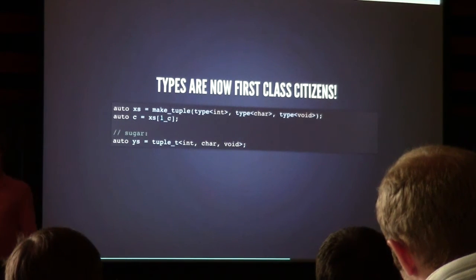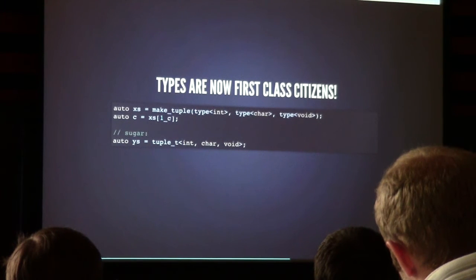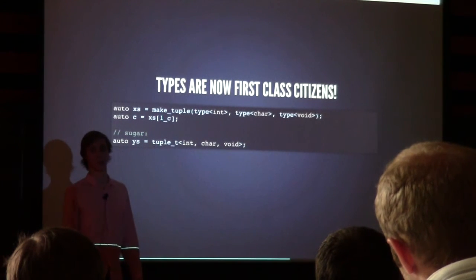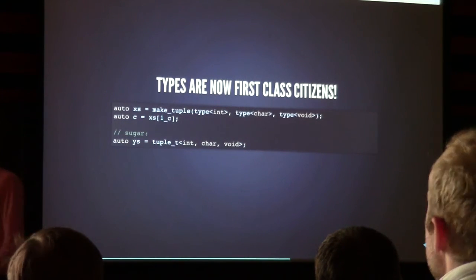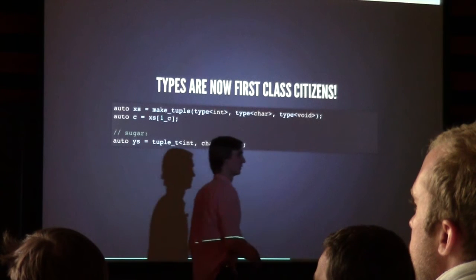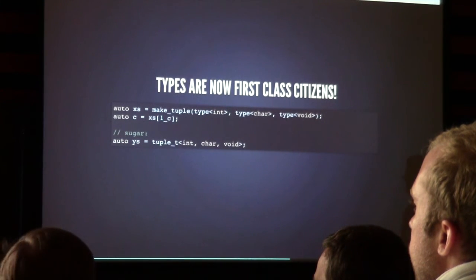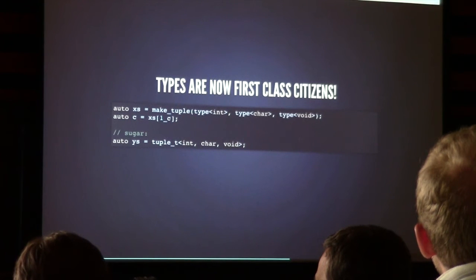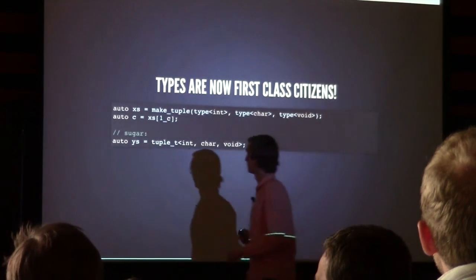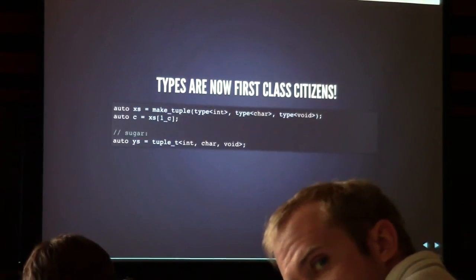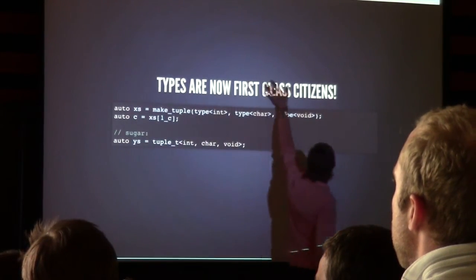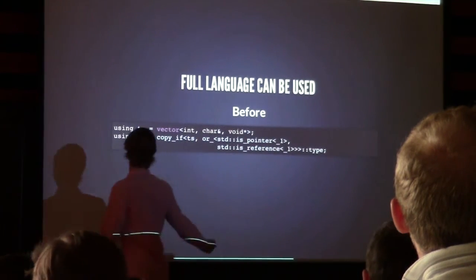One attendee disagrees that these are true first-class citizens, arguing you'd need to put them in a vector and sort at runtime. My response: what is special about std::vector? Being homogeneous is not more important than being able to put things in a tuple. The important thing is these are objects — we can copy them around, pass them to algorithms, use them as objects. You cannot sort runtime integers at compile time either, and integers are still first-class citizens. Types are now objects, and the full language can be used.